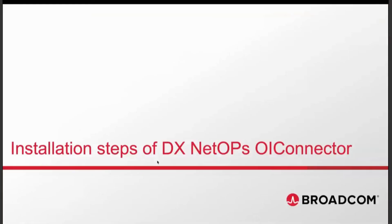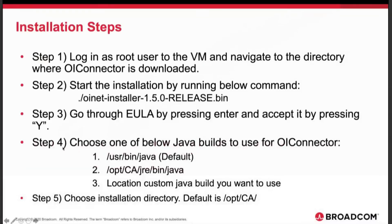To install the OI Connector, log in to the target machine, open a terminal or command prompt, and run the installer file with the provided command. The installer presents an end-user license agreement — review it and press Y to accept. You are then given choices for the Java build to use: the default bundled Java or a custom location. Finally, specify the installation directory, with the default being /opt/CA.